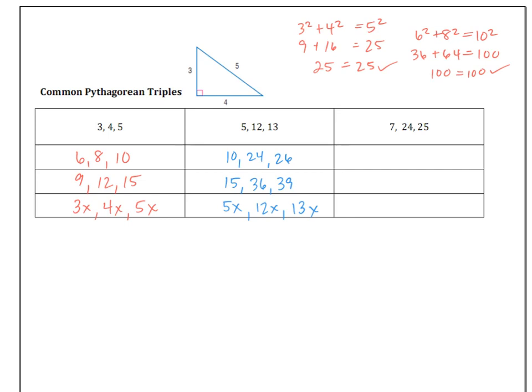Will you please fill in the third column? The original Pythagorean triple is 7, 24, and 25. Will you multiply them by 2, multiply them by 3, and then put the x's in? So go ahead and pause the video and fill in that column. All right, here's a quick peek of what you should have put in there. Hopefully, you got them right.